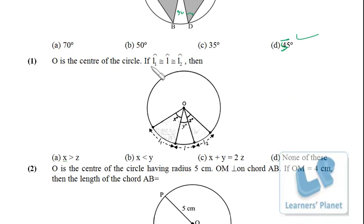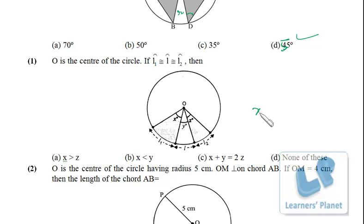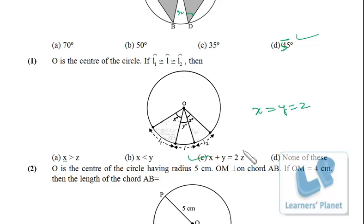Next: O is the center of the circle. If arc 1 equals arc 2, then this arc equals this arc equals this arc. If the three arcs are equal, they subtend equal angles at the center. That means X equals Y equals Z. Which of the given expressions can be true? X plus Y equals 2Z — this will be true, because substituting X plus Y in place of 2Z confirms the equality.